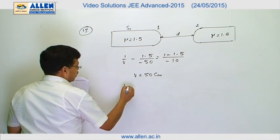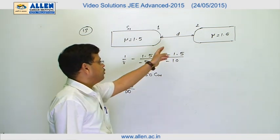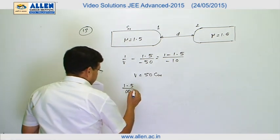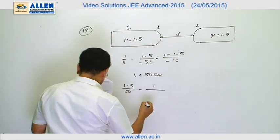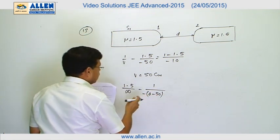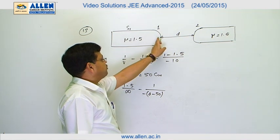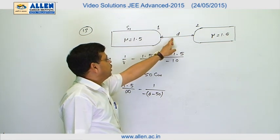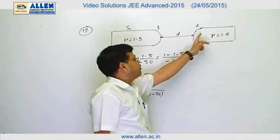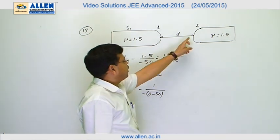we will write 1.5 divided by infinity, because the rays are becoming parallel to the axis of the rod, minus 1 upon minus d minus 50. If the image due to first refraction is getting formed somewhere here and this separation is d, that means, distance of the object for this rod will be d minus 50 from the second surface.